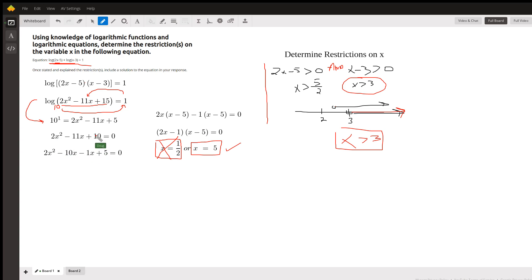This should have been a 5 here, out of 10. Whoops, because this was a 15. So 2x squared minus 11x plus 5 equals 0.